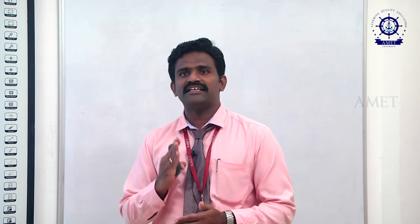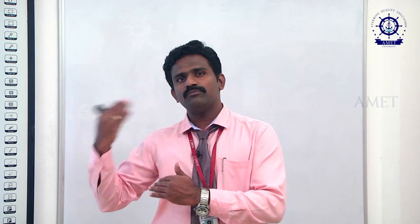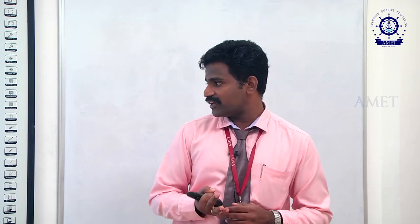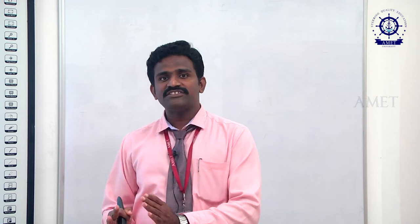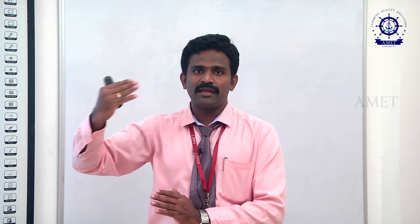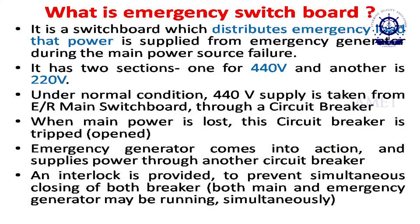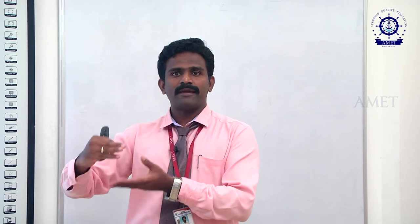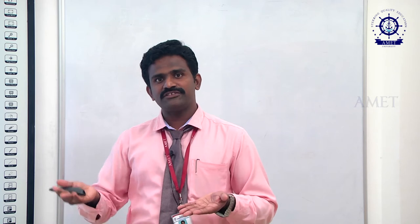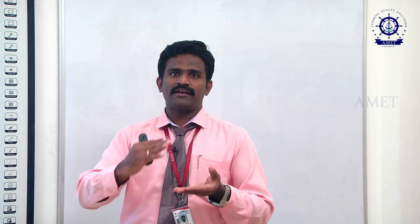The interlock is a very important device connected between the main switchboard and the emergency switchboard. It prevents simultaneous closing of both the main and emergency generator breakers at the same time. When we run the emergency generator in testing condition, the supply from the main switchboard is cut off. Both supplies cannot come to the emergency switchboard simultaneously. That is why we must check and operate the interlock between the two circuit breakers.